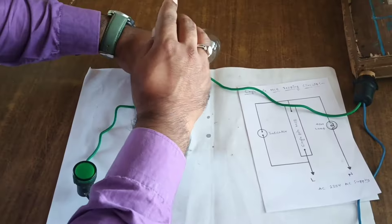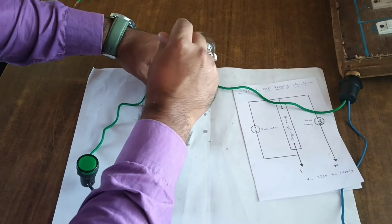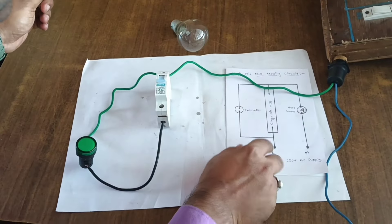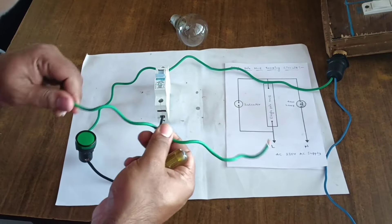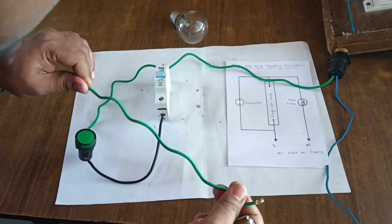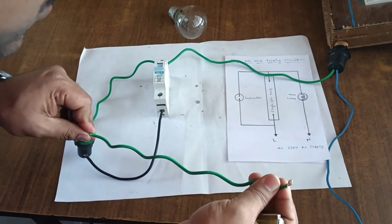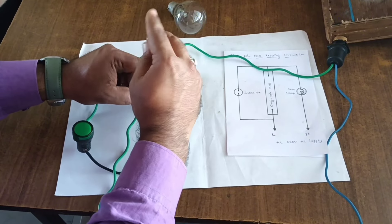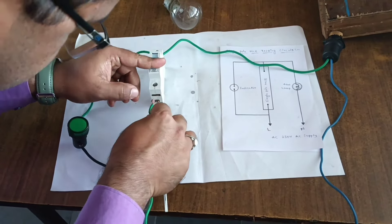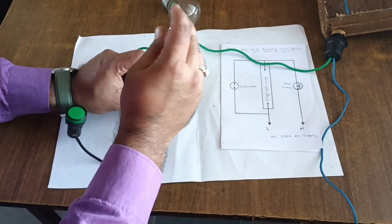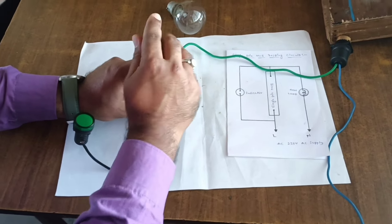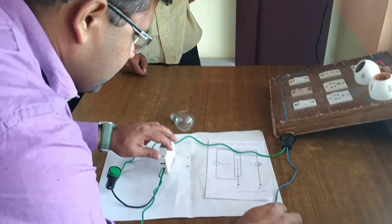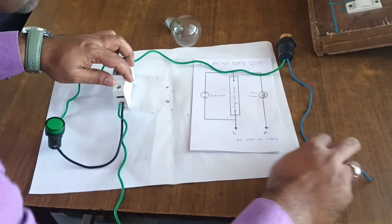Connect this connection. Take another wire, connect to MCB lower side. It goes to supply line. Now the connection is ready to test.